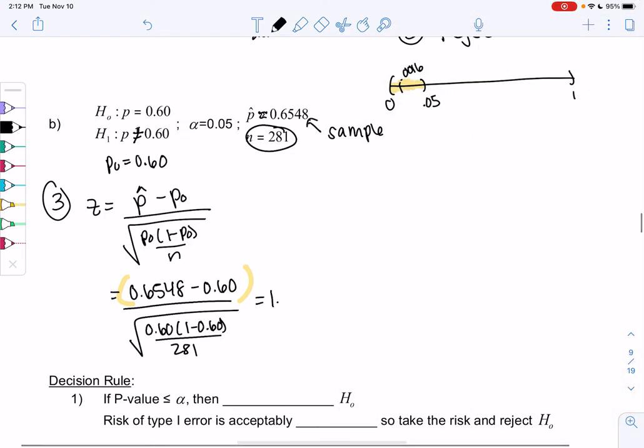And I get a z-score of like 1.875. So even though 65 felt a bit different, right? 0.6548 felt different than 60. Maybe it's not different enough because I'm within two standard deviations. So let's check that out with the p value.